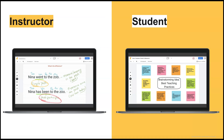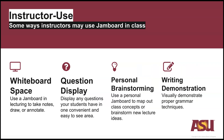Jamboard can be used for both instructor and student collaboration. Here are four examples of ways that instructors can use Jamboard in their classroom: a whiteboard space to write down concepts in a lecture, draw items, or take notes; sticky notes or text boxes to create a question display for students; personal brainstorming of class concepts or mapping out a course; and using different backgrounds to create a paper-like environment where grammar techniques or sentence diagrams can be demonstrated.